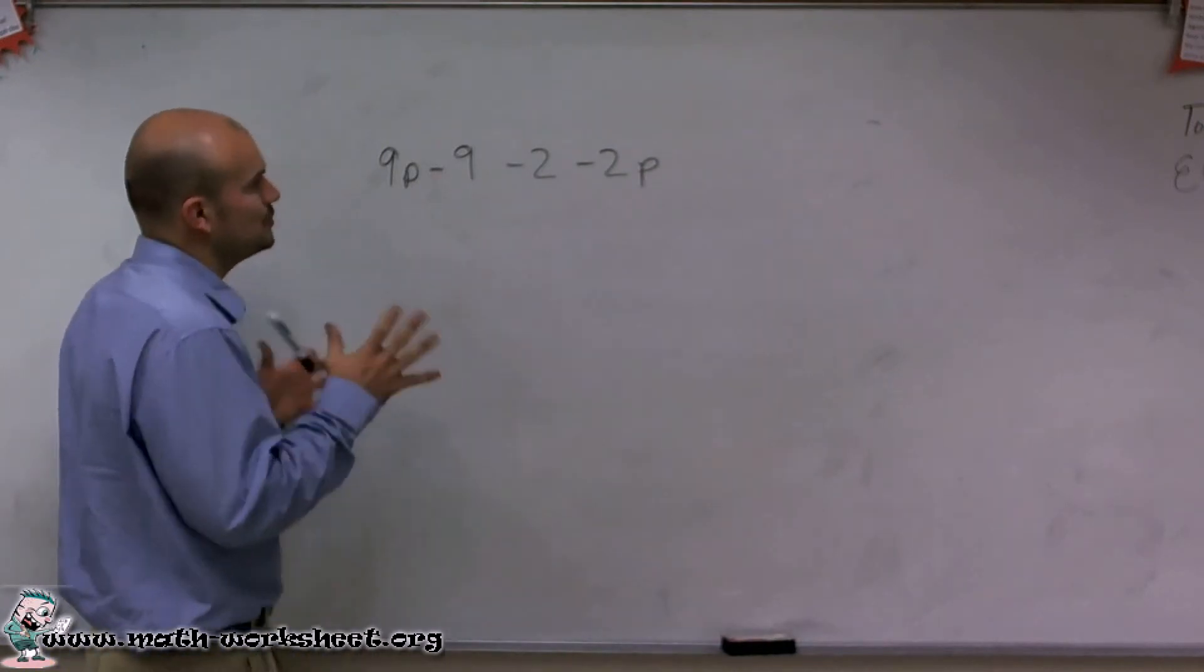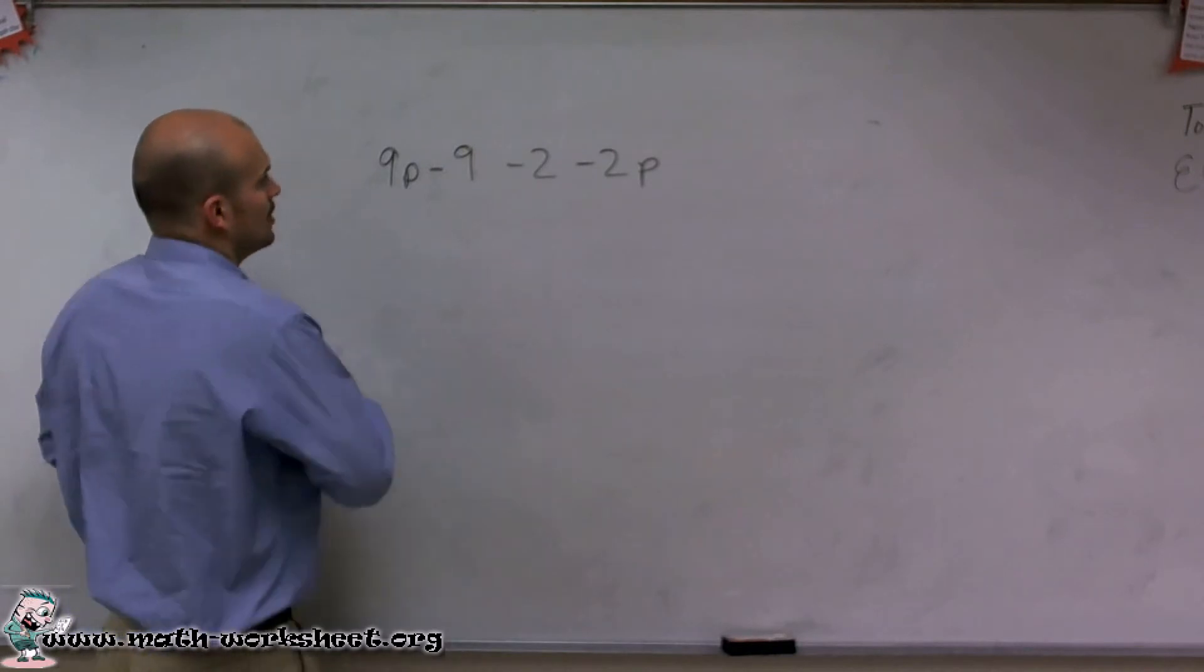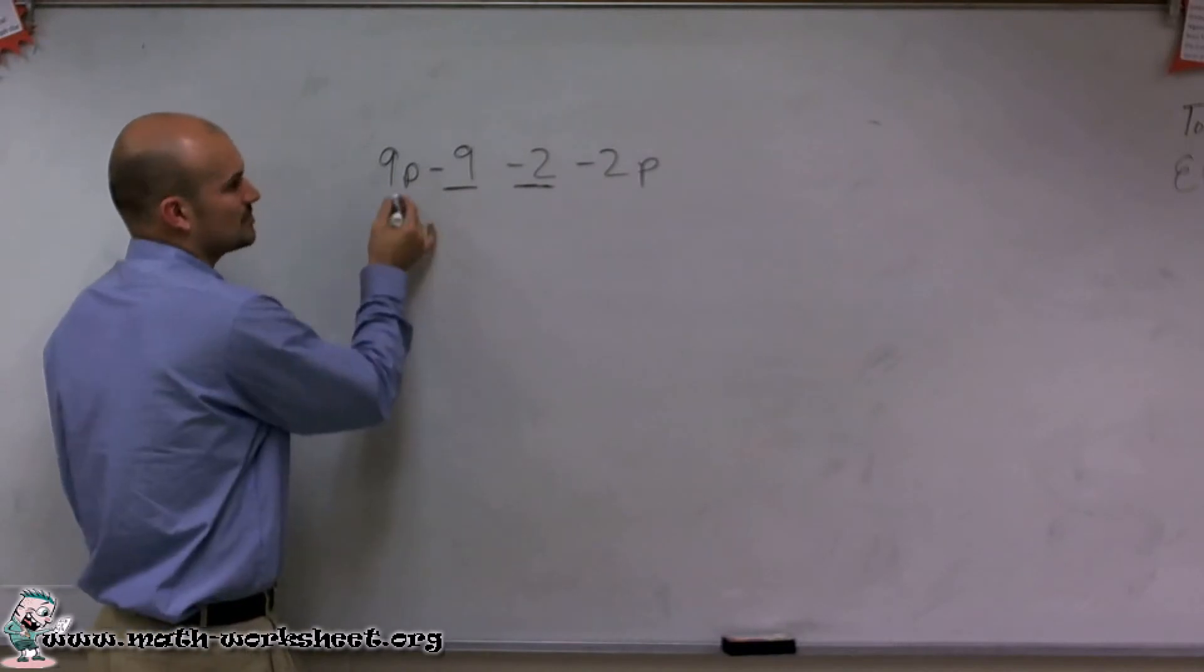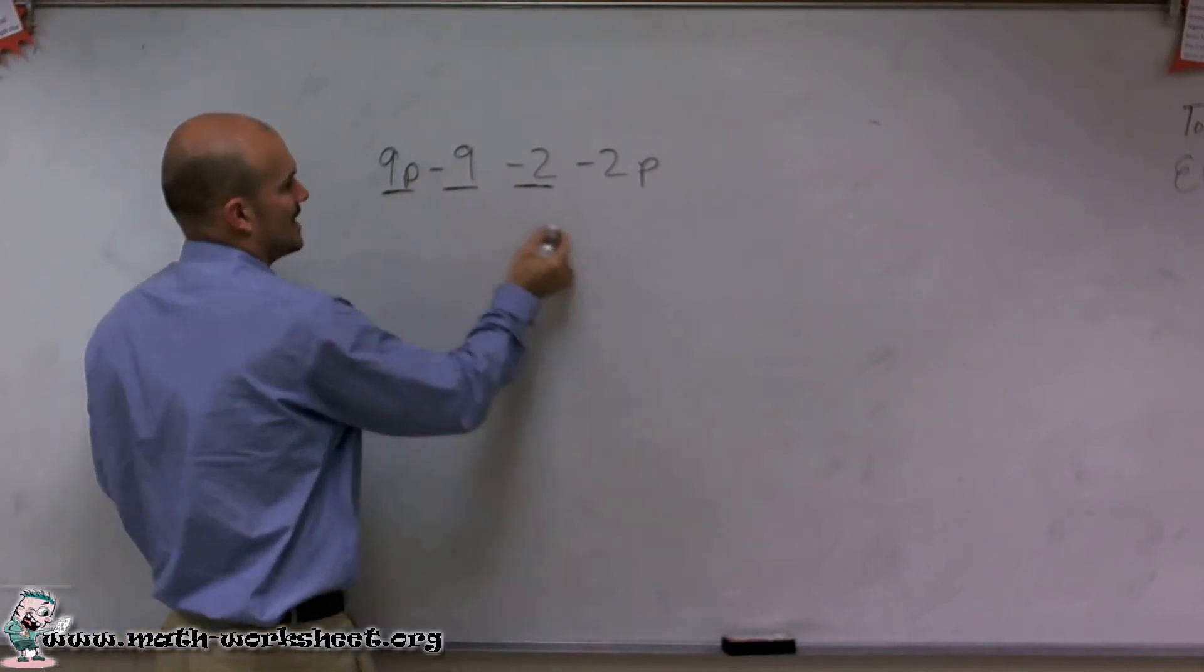So let's look at two different types of terms that we have. We have numbers, which would be negative 9 and negative 2. And then we have numbers which would be multiplied by variables, which would be 9p and p.